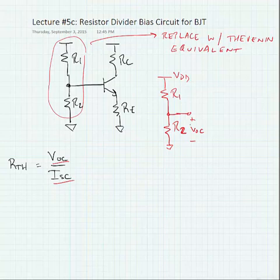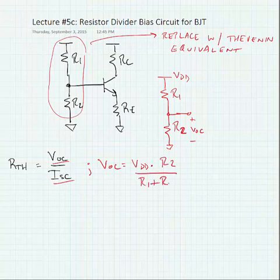Now this is a simple voltage divider circuit. So the open circuit voltage VOC is equal to VDD times R2 divided by the sum of the resistances R1 plus R2.